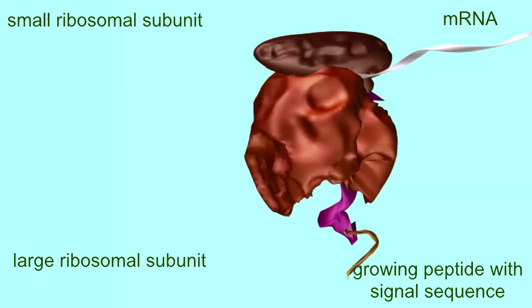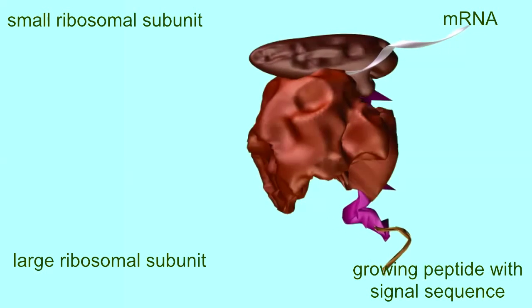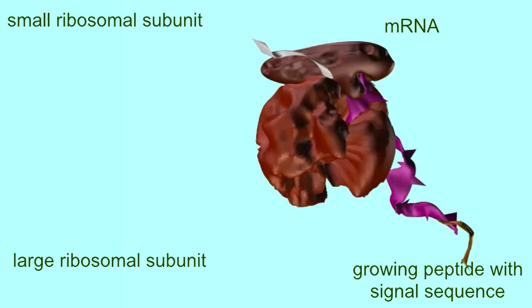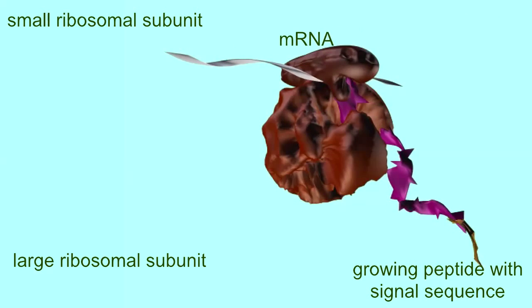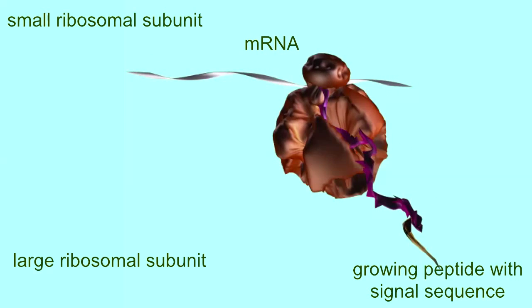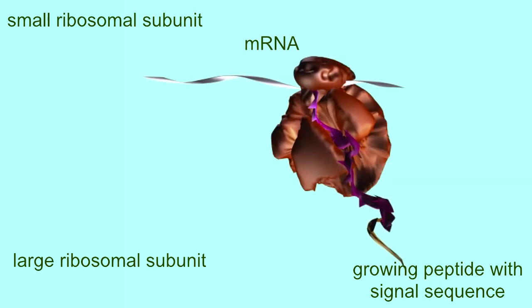Proteins which will be translocated to the endoplasmic reticulum begin with a signal sequence of hydrophobic amino acids when they are translated. These amino acids will later be excised and will not be part of the mature protein.